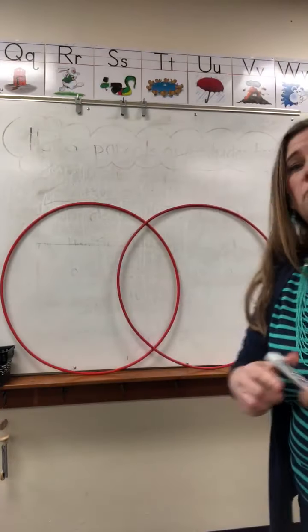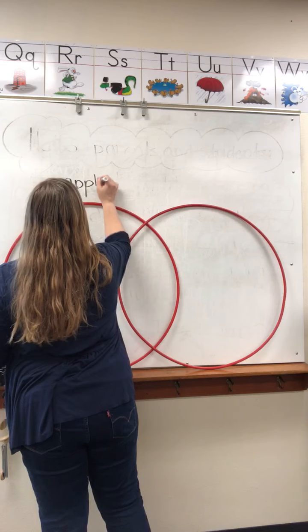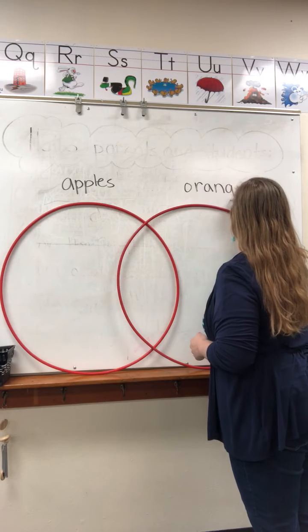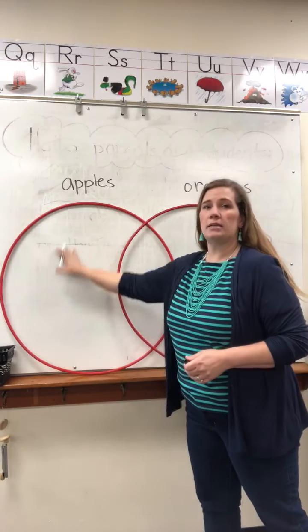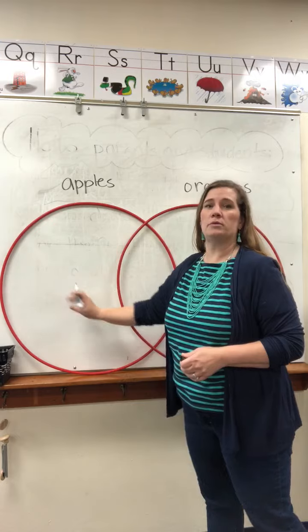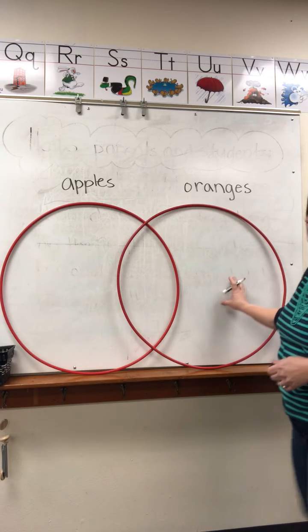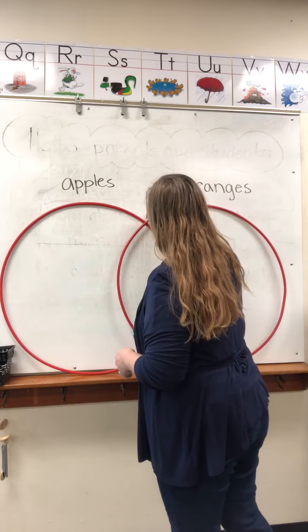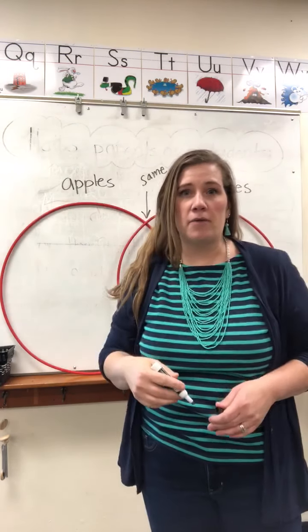When we use the Venn diagram, we are usually taking two things. Let's take apples — I would put apples on one side. I'm going to compare apples to oranges. Everything on this side is all about apples. What's different about oranges goes on this side — it is only about oranges on this side, and this side is only about apples. The middle where things overlap is what do those two items share in common.